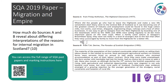Here is an example Two Source question from the 2019 paper, Migration and Empire section. Question: 'How much do Sources A and B reveal about the differing interpretations of the reasons for internal migration in Scotland?' At this point, you can pause the recording and attempt this question under timed conditions. If you don't study Migration and Empire, use the QR code on screen to access SQA past papers and find the Two Source question for your section. Marking instructions are also available so you can mark your completed answer.